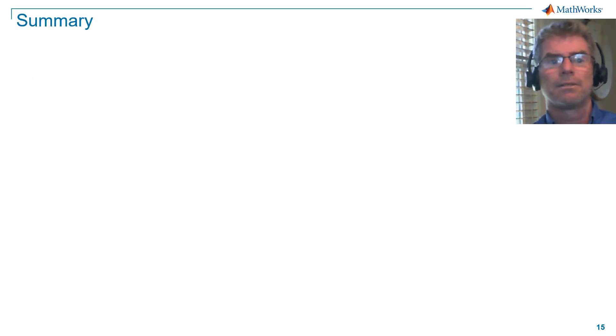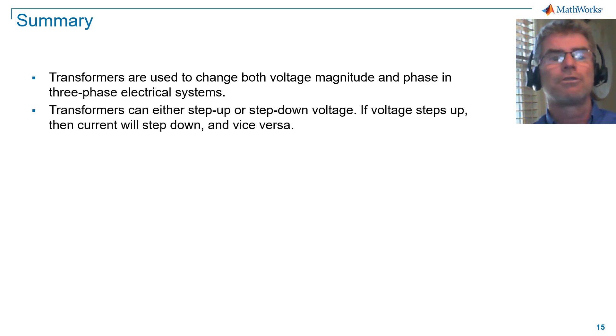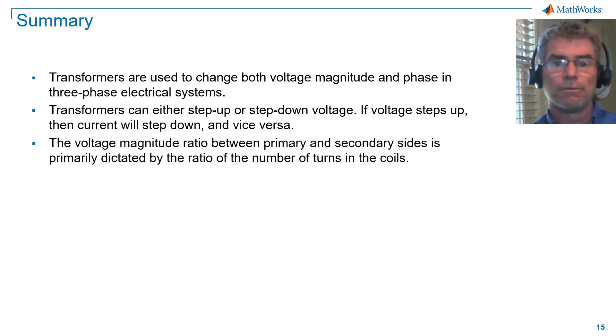So in summary, transformers are used to change both voltage magnitude and voltage phase in three-phase electrical systems. Transformers can either step up or step down voltage. If voltage steps up, the current will step down and vice versa. The voltage magnitude ratio between primary and secondary sides is primarily dictated by the ratio of the number of turns in the coils.